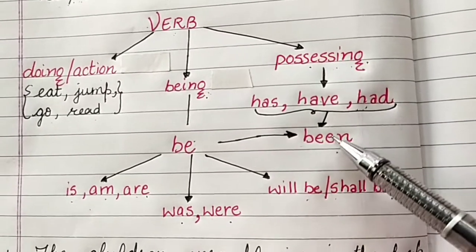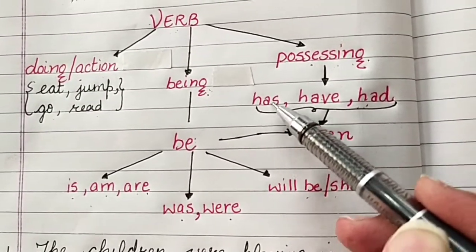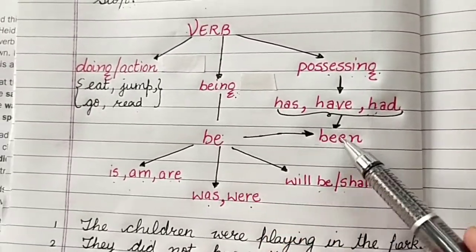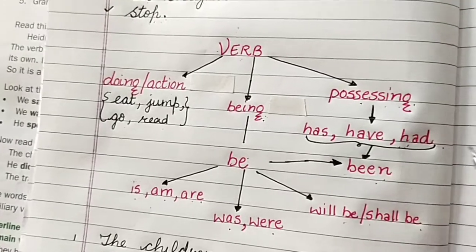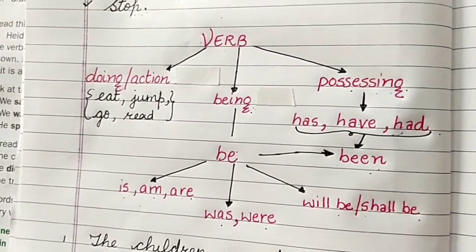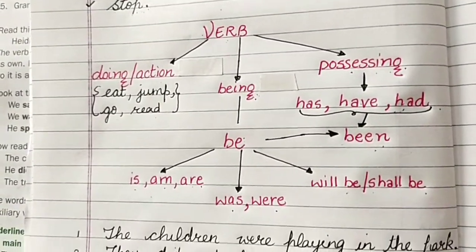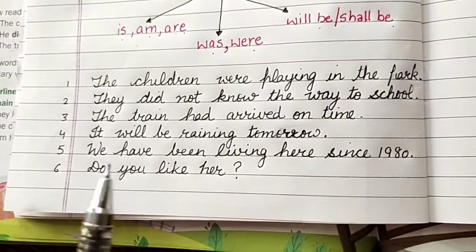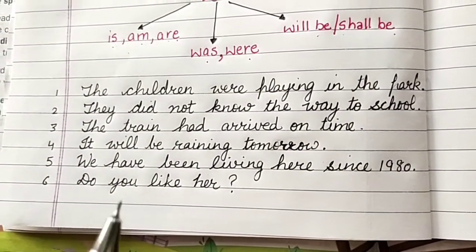And been is also used somewhere with them. Has been, have been, had been. You will often see been in certain tenses. See verbs and tenses are all connected. Now let's look at these sentences to understand our original topic that is auxiliaries.